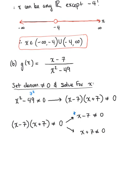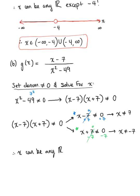In case one, we add 7 to both sides, the 7s cancel, leaving us with x cannot be equal to positive 7. In case two, we subtract 7 from both sides, the 7s cancel, leaving us with x cannot be equal to negative 7. So we observe that x can be any real number except plus or minus 7.